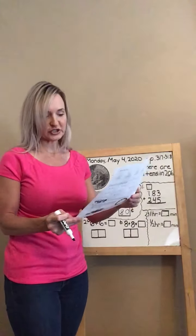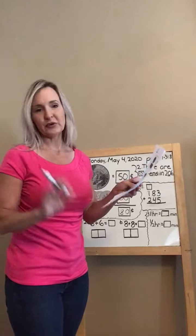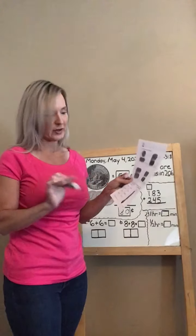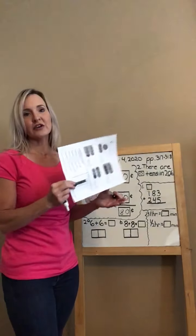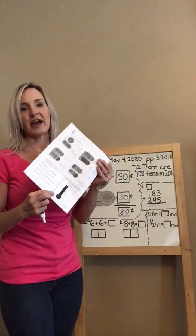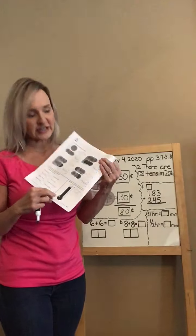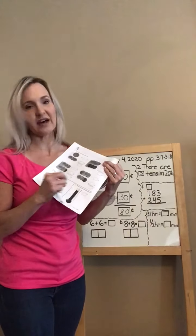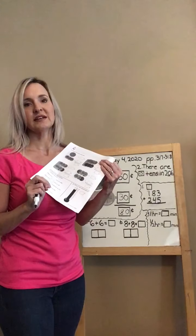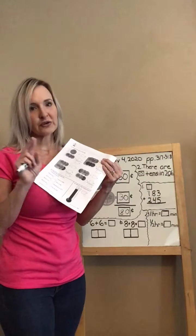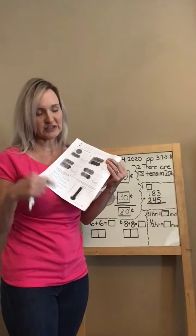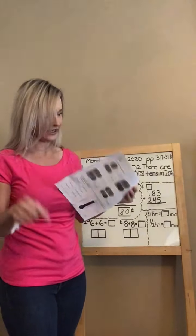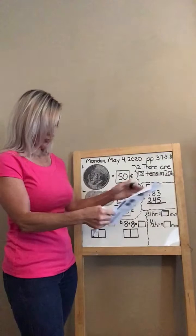Number three asks about the temperature. Remember what those small lines on the thermometer mean — you're counting by how many degrees? Two degrees each — you're going to skip count by two.